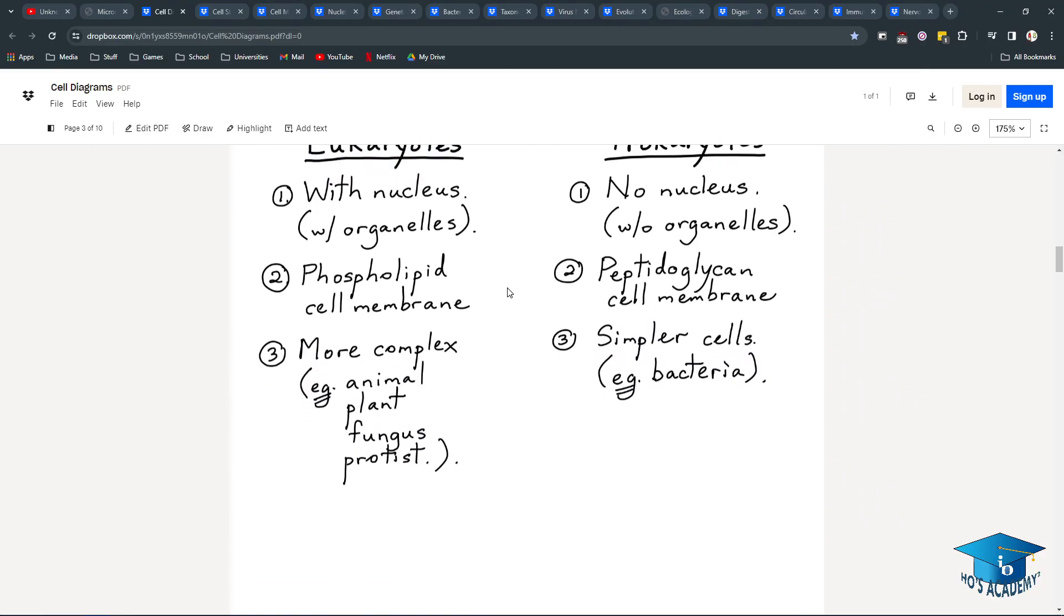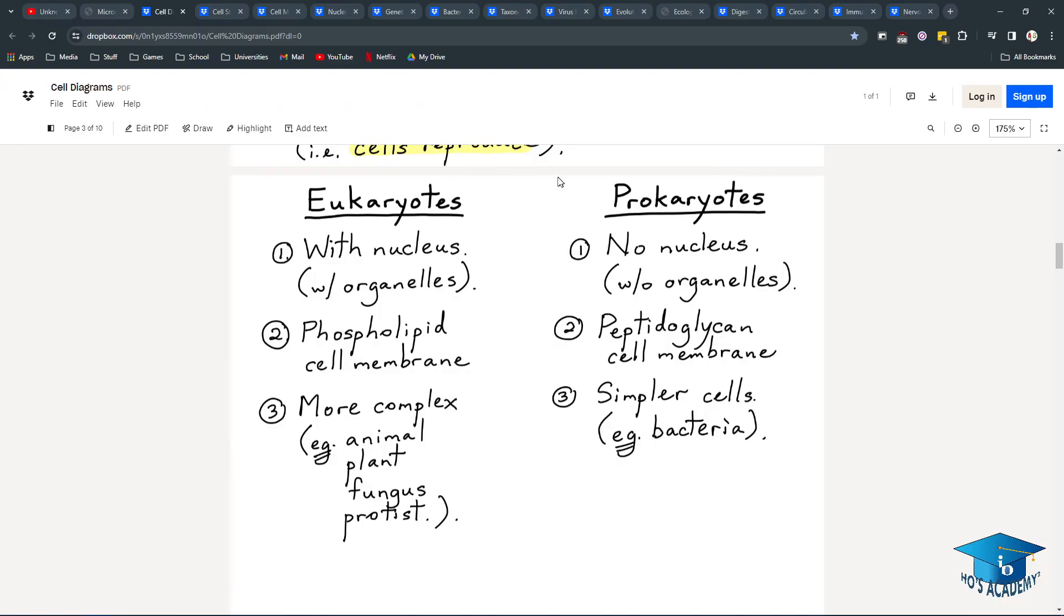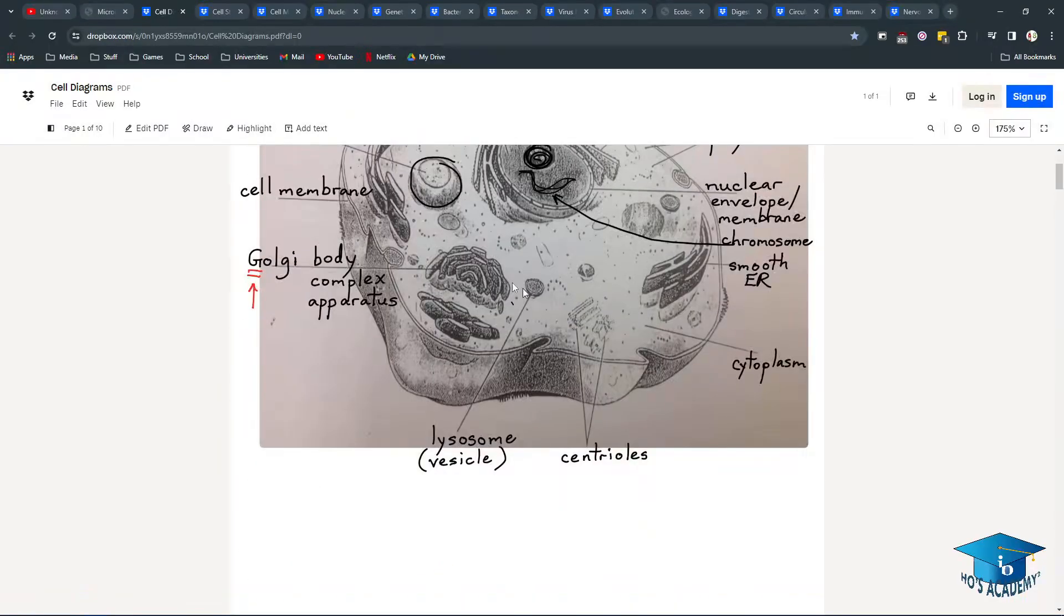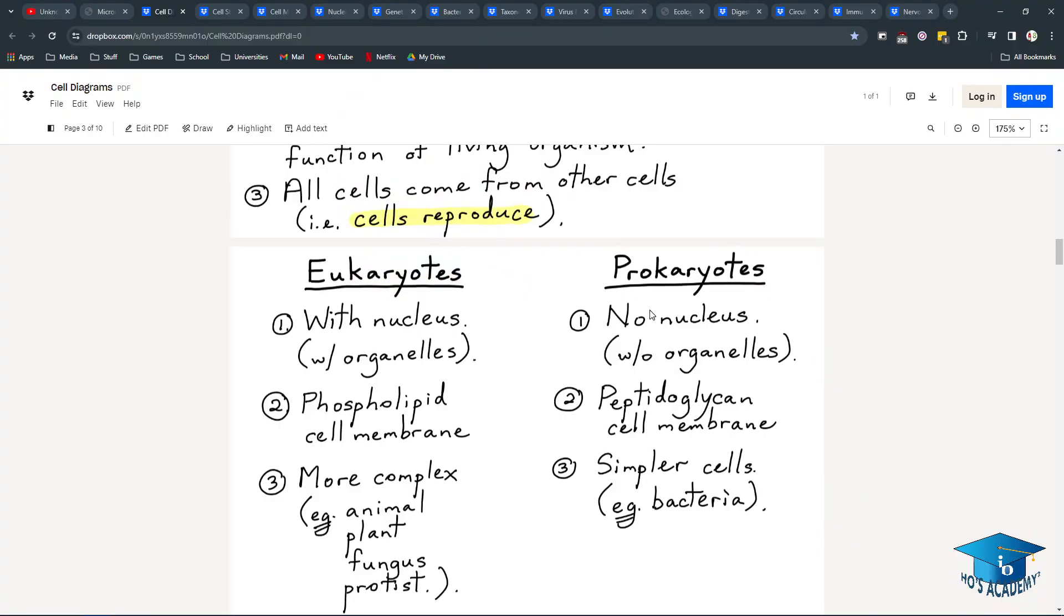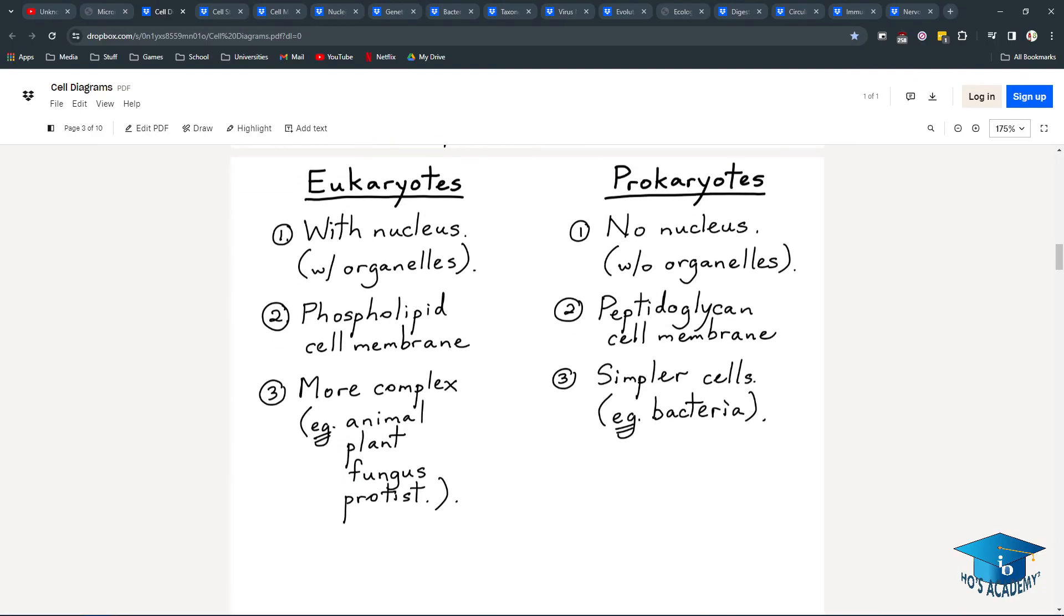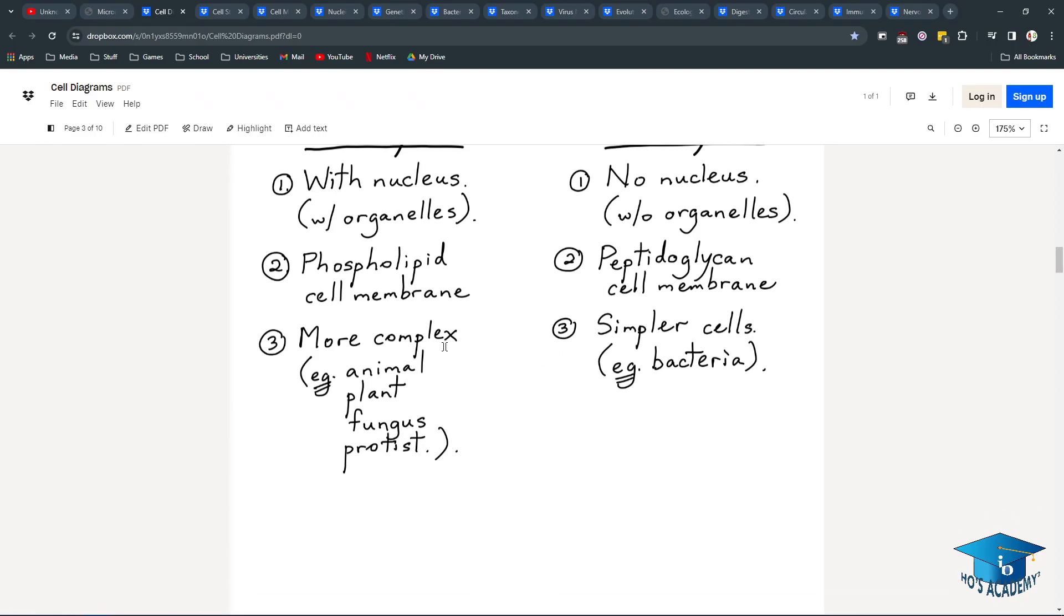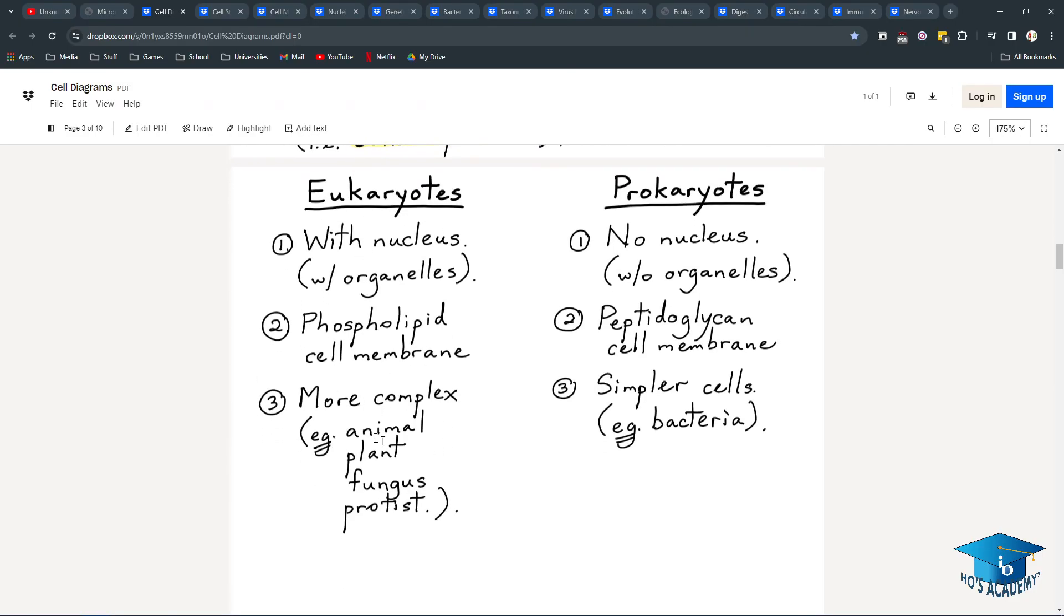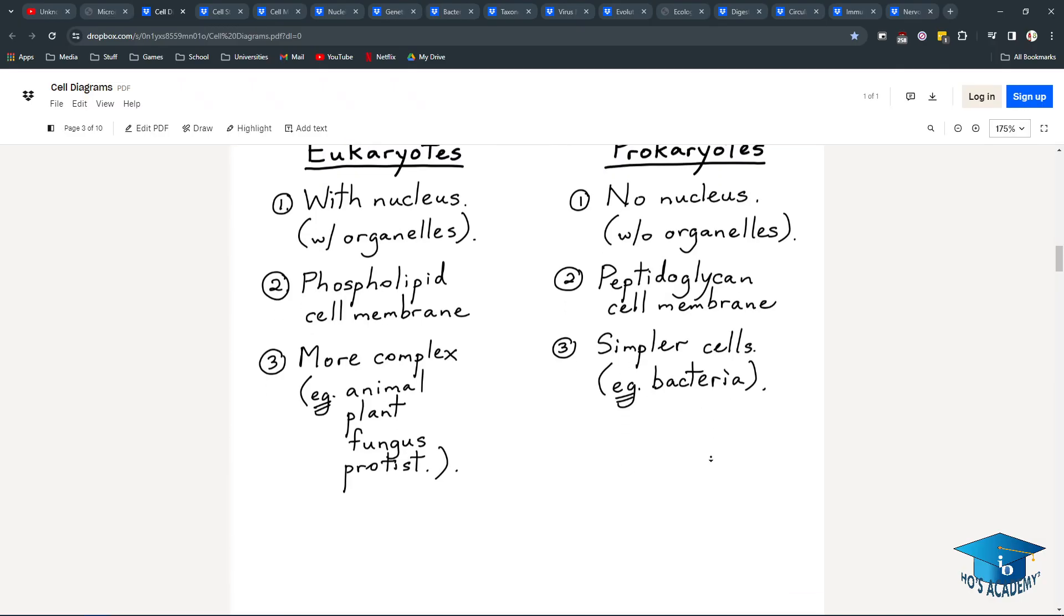You probably have to compare and contrast prokaryotes. Eukaryotes have the nucleus and they have organelles, which means defined organelles that are membrane bound. But in prokaryotes, they're free-floating in the cytoplasm. There is no nucleus in prokaryotes. They just have a nucleoid region with plasmids or DNA strands floating. We have the phospholipid cell membrane in eukaryotes, but prokaryotes have the peptidoglycan cell membrane. Generally, eukaryotes are much more complex, whereas prokaryotes are much simpler.